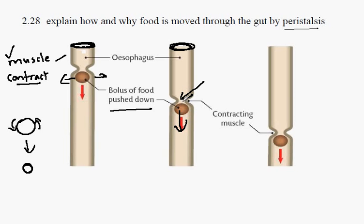As the bolus moves downwards, it stretches the gut wall in this region, which will then contract in a kind of reflex, once more constricting, squeezing and pushing the bolus further down. Peristalsis.